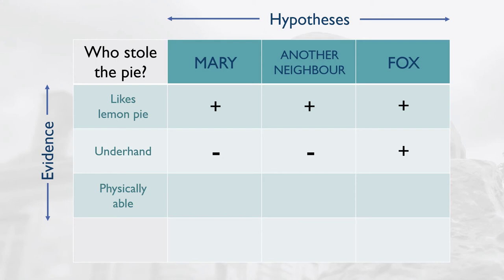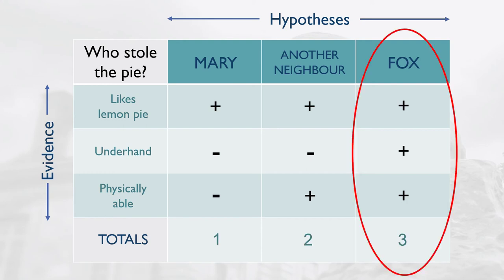But he's not aware of anything wrong with his other neighbours, or with the fox. So Mary gets a minus sign, whereas the other two get pluses. Now in deciding which of the hypotheses is the strongest, we simply add up the total number of pluses against each one. So in this example, Mary actually scores the lowest with one, but it's the fox who comes out on top with three.